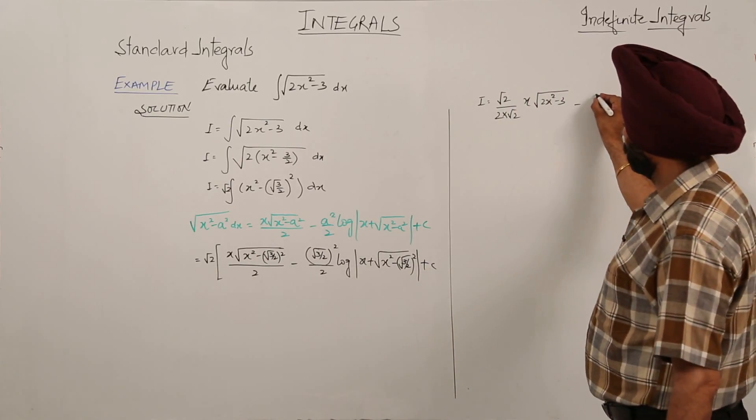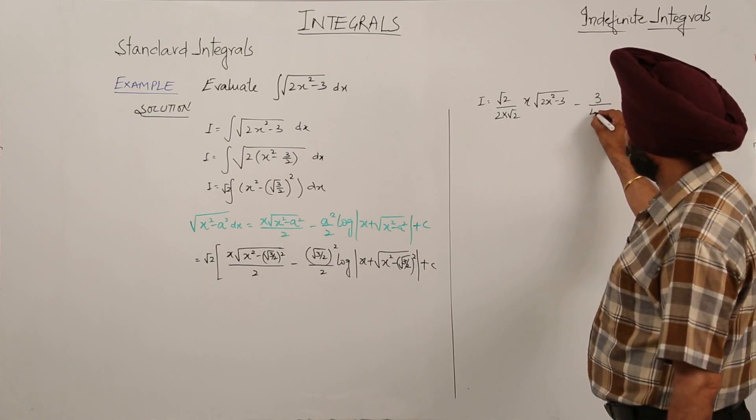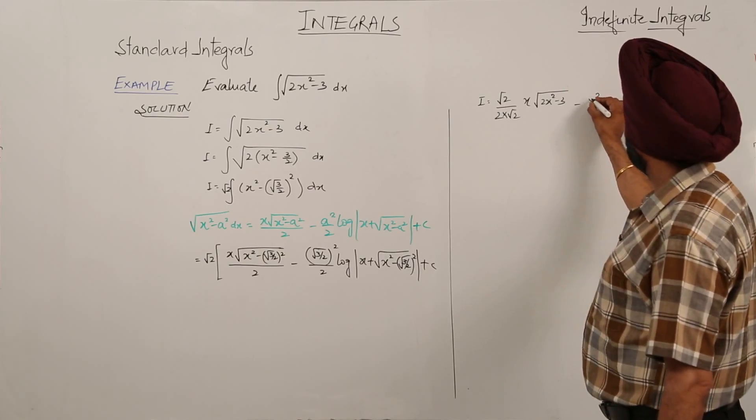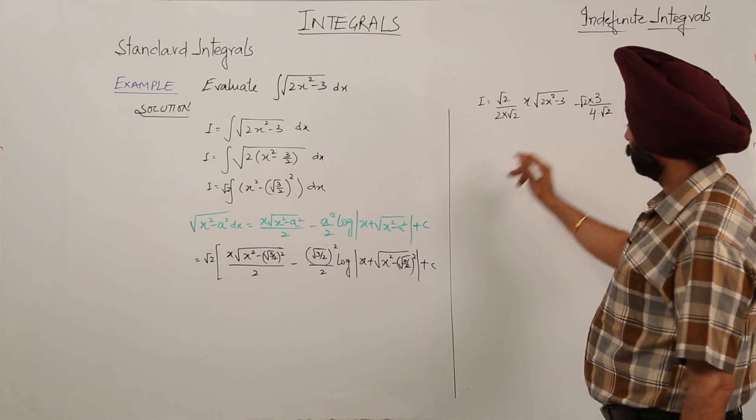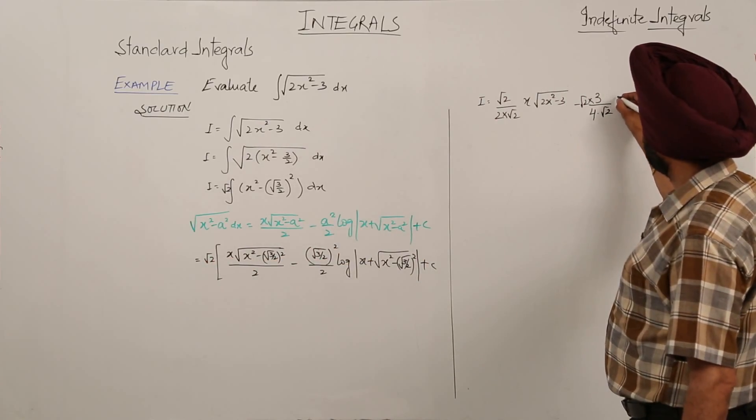Minus 3 by 4 with root 2 and root 2 also here. This common root 2, x square root 2...